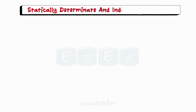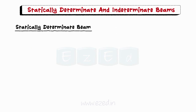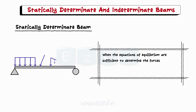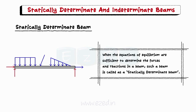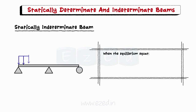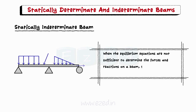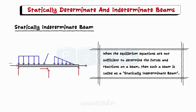We will now learn about statically determinate and indeterminate beams. A statically determinate beam is one where the equations of equilibrium are sufficient to determine the forces and reactions in a beam. For example, a beam with three unknown support reactions can be solved using three conditions of equilibrium. A statically indeterminate beam is one where the equilibrium equations are not sufficient to determine all forces and reactions. For example, a beam with five unknown support reactions cannot be fully solved using only three conditions of equilibrium.